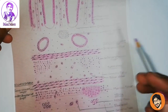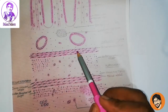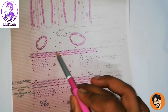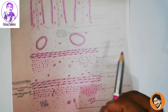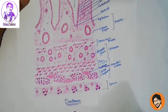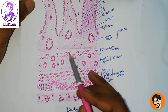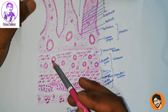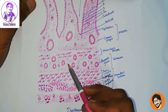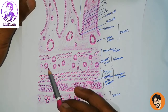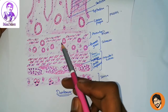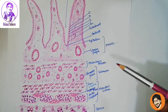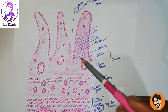Without wasting our time, let's move toward our next lecture about the jejunum. In the jejunum, the muscularis mucosa has no spaces in it because there is no Brunner's gland. The submucosa also has no Brunner's gland, just like we discussed previously. The second difference is that the jejunum has the lamina propria.